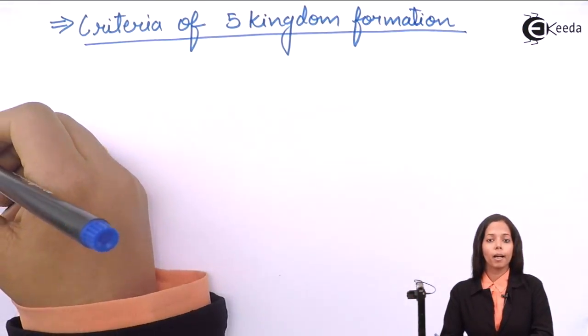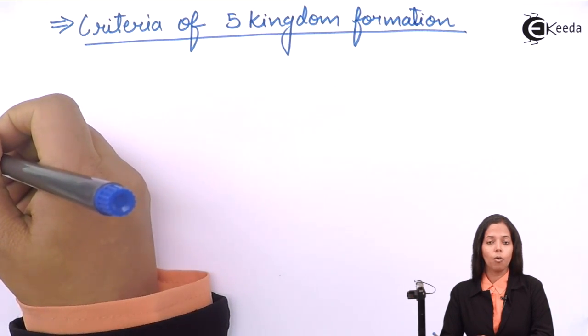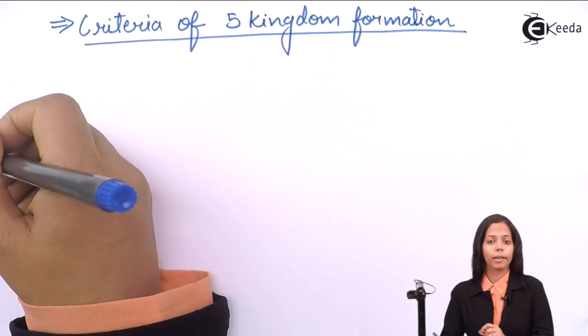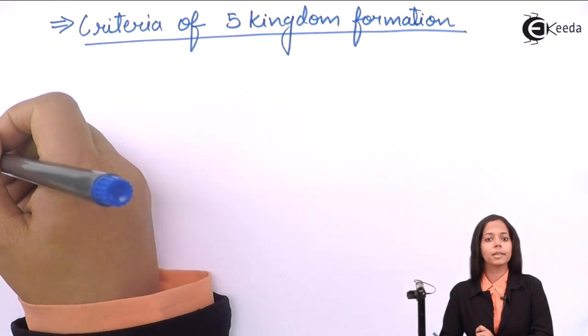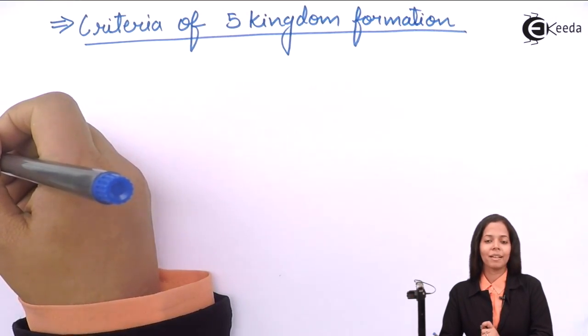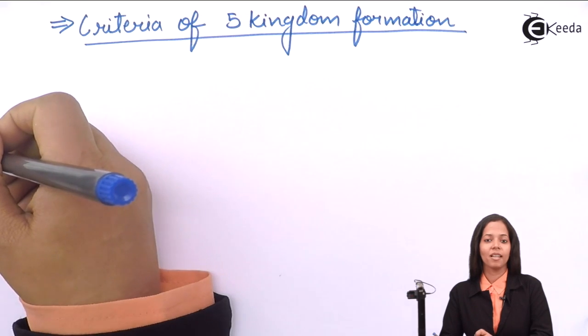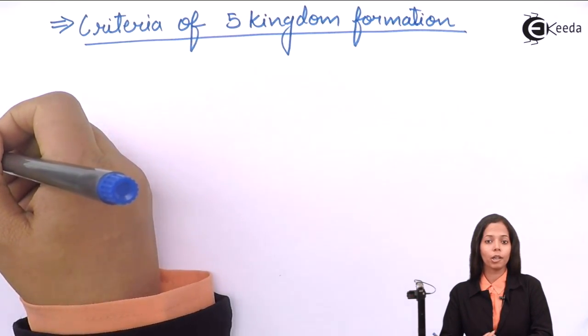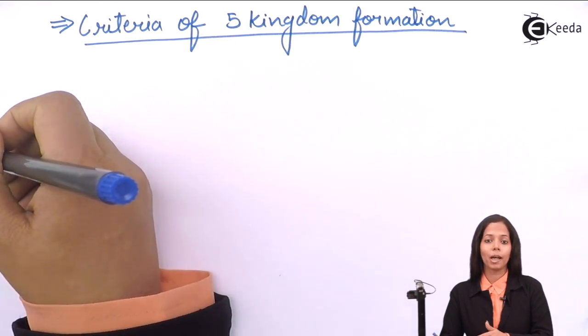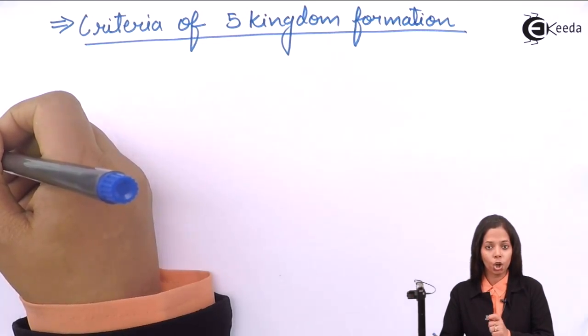The first criteria used by R.H. Whittaker was cell organization. By the word cell organization, he means the type of cell. What are the two types of cell we have studied? Prokaryotic and eukaryotic. So on the basis of prokaryotic and eukaryotic, he has formed the group.